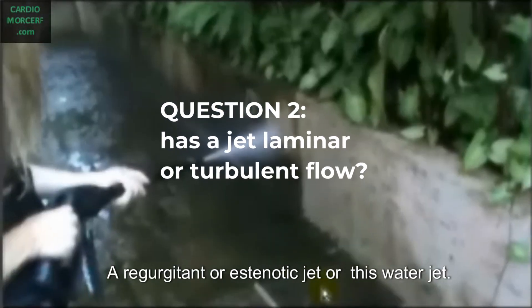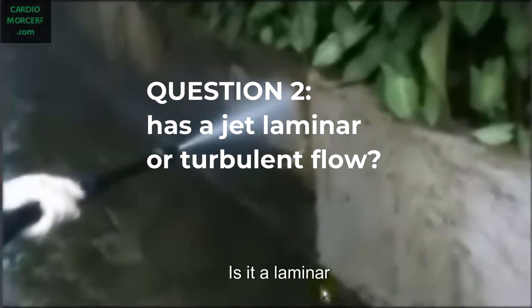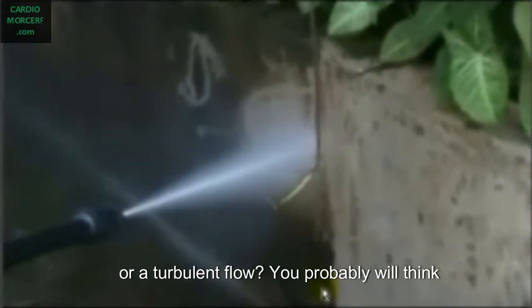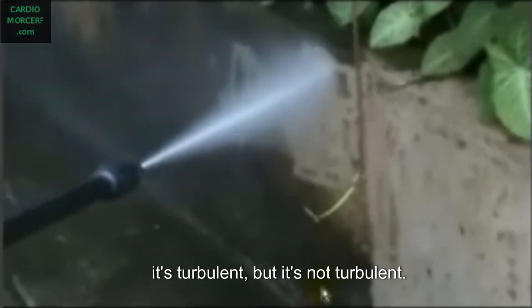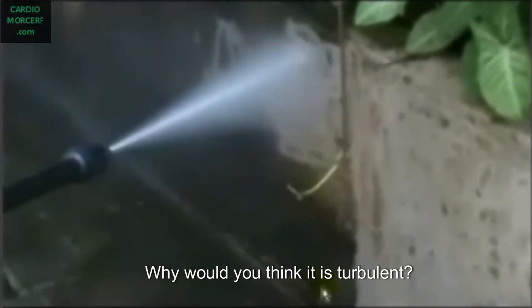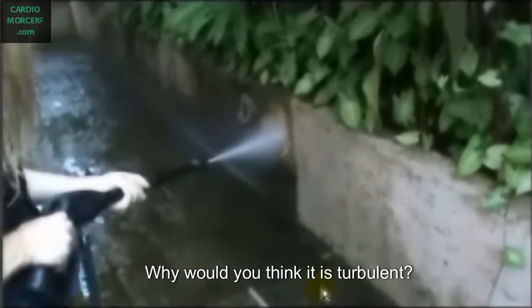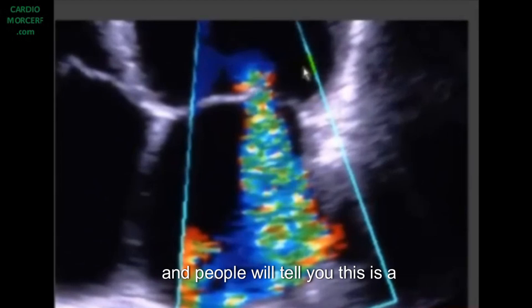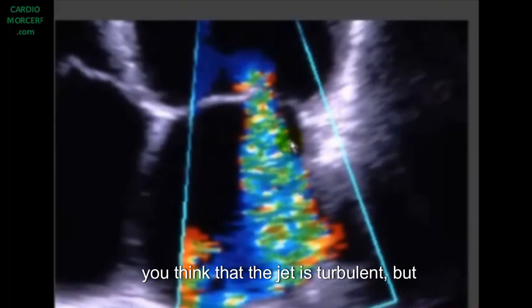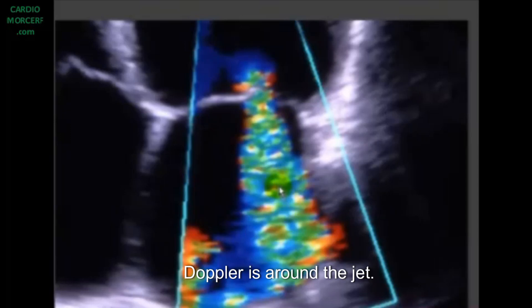Another question I make. A regurgitant or stenotic jet, has it a laminar or turbulent flow? You probably will think it's turbulent, but it's not turbulent. The jet is laminar. Why would you think it is turbulent? Probably because you've seen color Doppler, and people will tell you this is a turbulence of a mitral regurgitation. But it's not turbulent. The jet is laminar. The turbulence you are seeing in the color Doppler is around the jet. The jet itself is laminar.